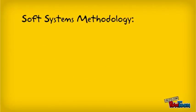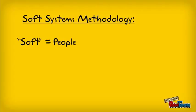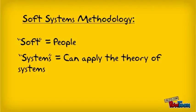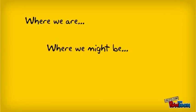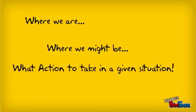We call it Soft Systems Methodology because 'soft' refers to people — it's all about people and the way they think and relate to one another. 'Systems' because we can apply the theory of systems to relationships, objects, people, procedures, and resources working together in an organization. And 'Methodology' because it is an organized way of thinking that takes us through a process of thinking about where we are, where we might be, and what action to take in a given situation.